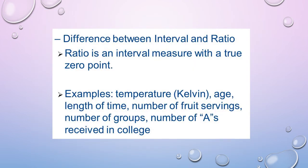The difference between interval and ratio is highlighted again: ratio is an interval measure with a true zero point. Ratio is actually a subset of interval — it is interval but with a true zero. Examples include temperature, age, length of time, number of food servings, number of groups, and number of assignments received in college.